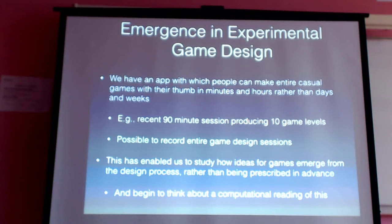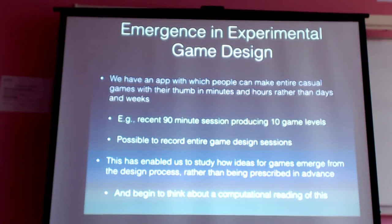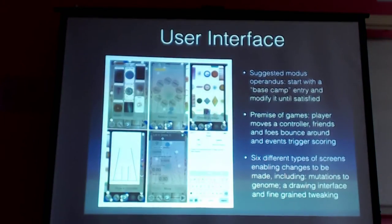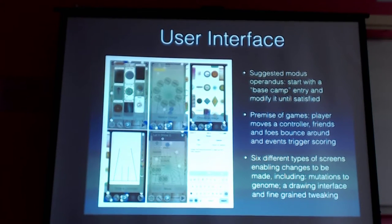It's enabled us to study how ideas for games emerge from the design process rather than being prescribed in advance — really looking at what the software gives you back, rather than how you get the software to give you something. We're beginning to think about a computational reading of that: how software could take advantage of emergent properties as it's making games. The user interface mode is to start with a base camp entry and keep playing around until you're satisfied, and we have in mind a video going from Frogger to Asteroids to show how flexible the search space is.